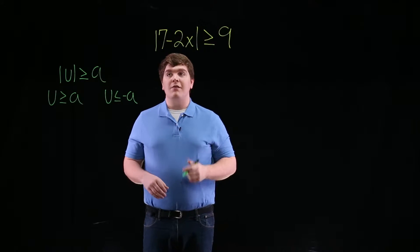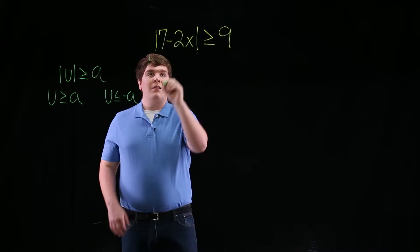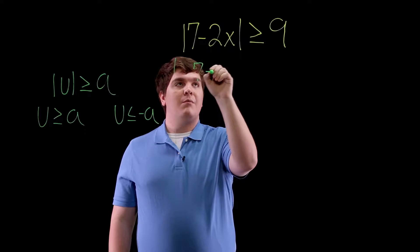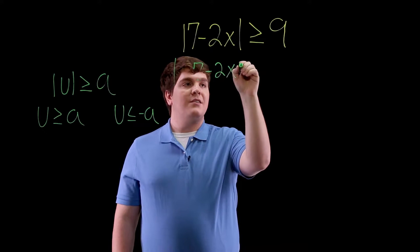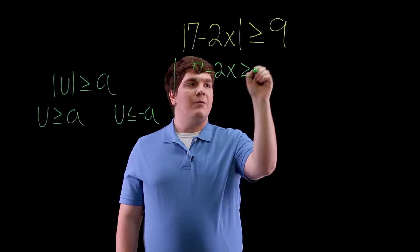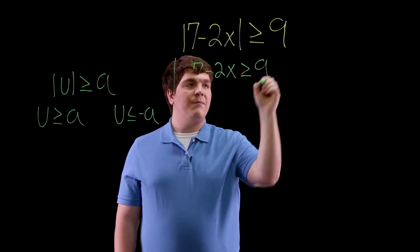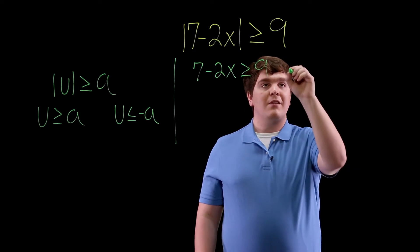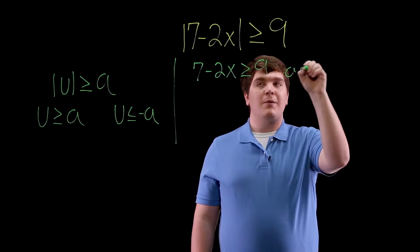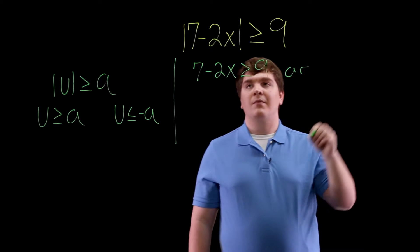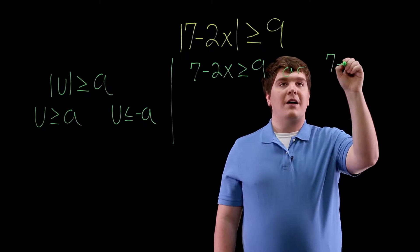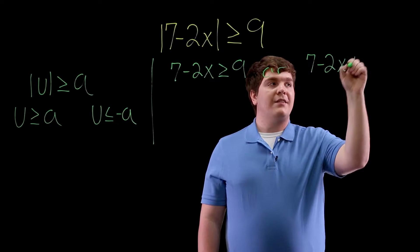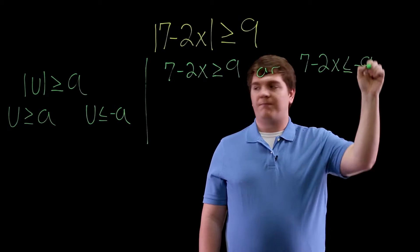So we wish to solve the two equations: 7 minus 2x is greater than or equal to 9, and 7 minus 2x is less than or equal to negative 9.